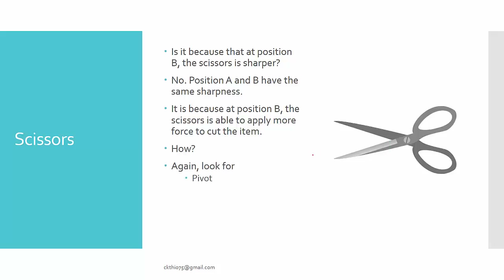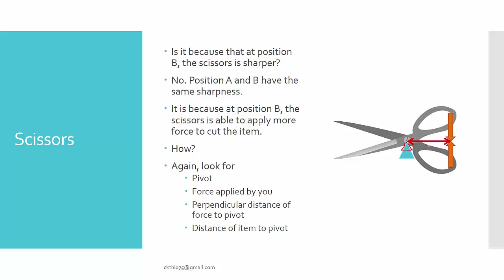But how? Looking for the pivot — it's right at the center. The force you apply is at the handle, with perpendicular distance 1 from that force to the pivot. When you place the item close to the pivot, that is distance 2. Like in the previous cases, force 2 is much larger than force 1, which is why placing the item near the pivot at the mouth of the scissors makes cutting easier.